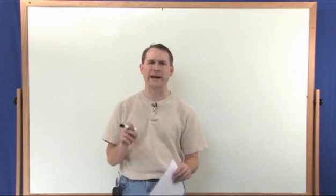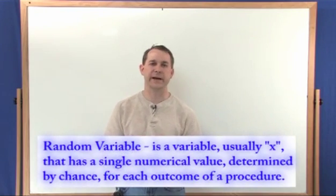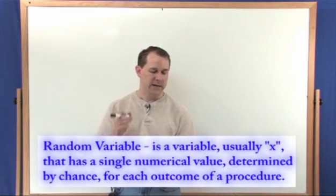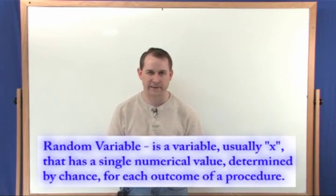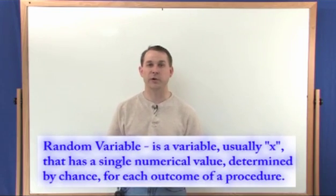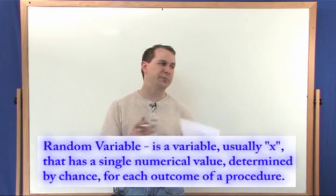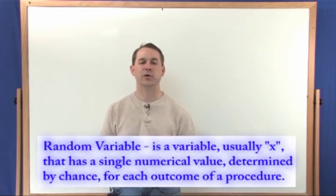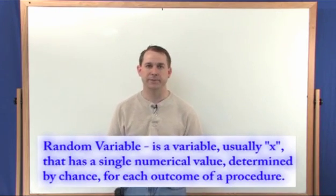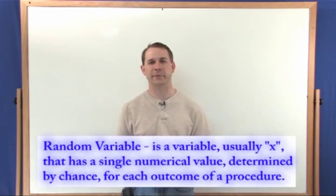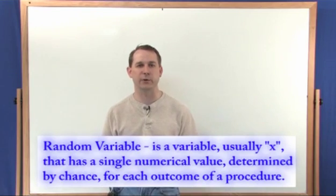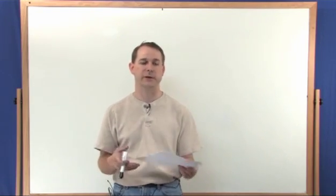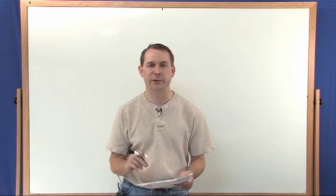So the first thing is a random variable. A random variable has a very fancy sounding name. All it means is the following. It's a variable usually denoted by x, just like any other variable that you've used in algebra, that has a single numerical value determined by chance for each outcome of a procedure or an experiment. So it's a variable. It's like in algebra you have variables. In statistics you have variables. We're going to call them x. The only difference is the value that x has is going to be basically a probability. It's going to be determined by a probability. Think of the random variable as a variable with a single value determined by chance, determined by basically a statistical outcome of an experiment.